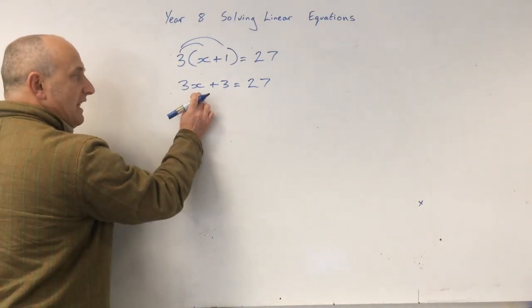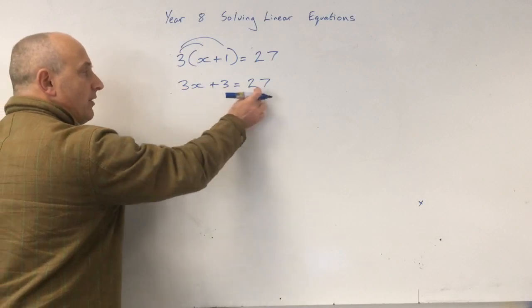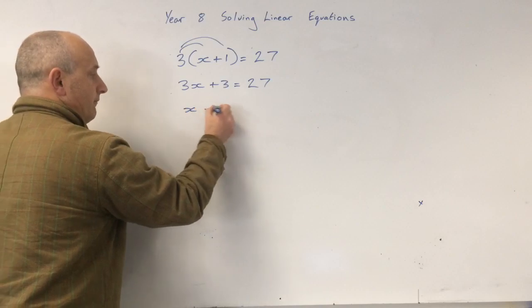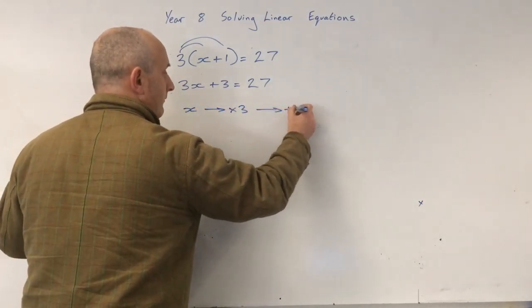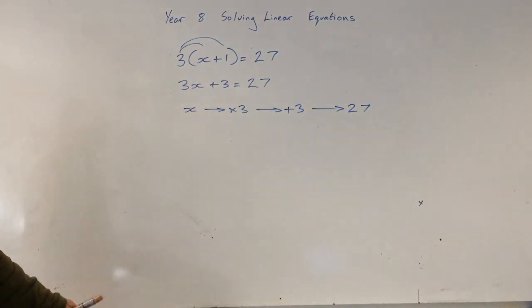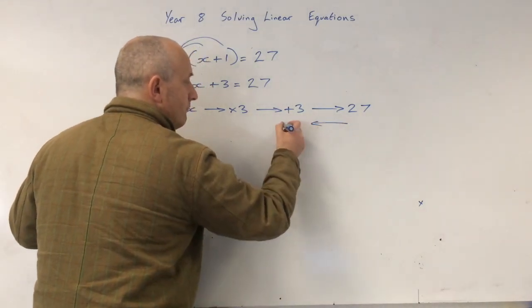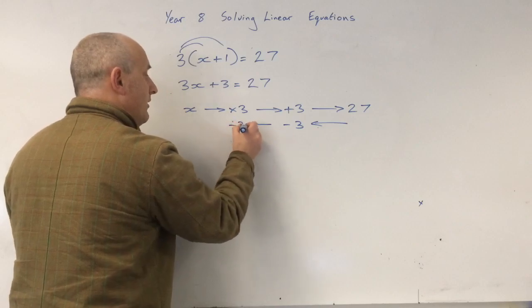So 3x plus 3 equals 27. So now what do we do with x? We multiply by 3, then we add 3, and the answer is 27. Okay, so now let's do the reverse.